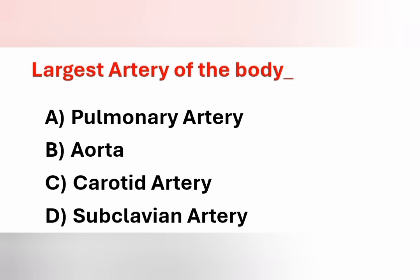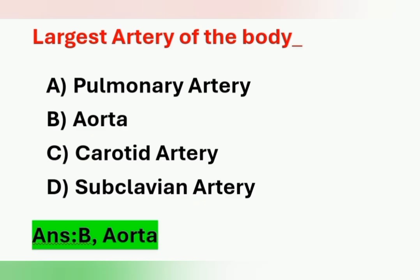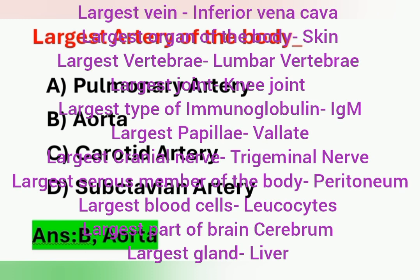Next question: what is the largest artery of the body? Options: Option A – pulmonary artery. Option B – aorta. Option C – carotid artery. Option D – subclavian artery. The largest artery of the body is the aorta. Option B is the correct answer. Here are some additional points.